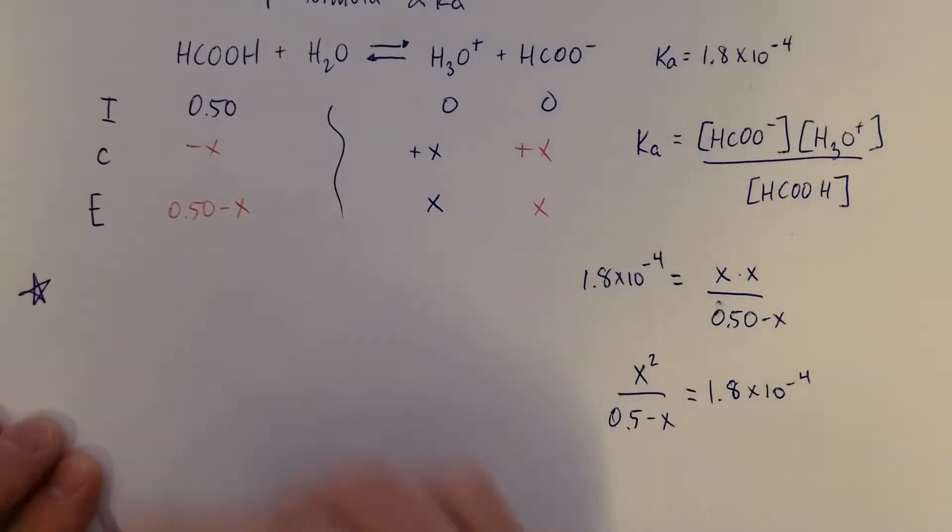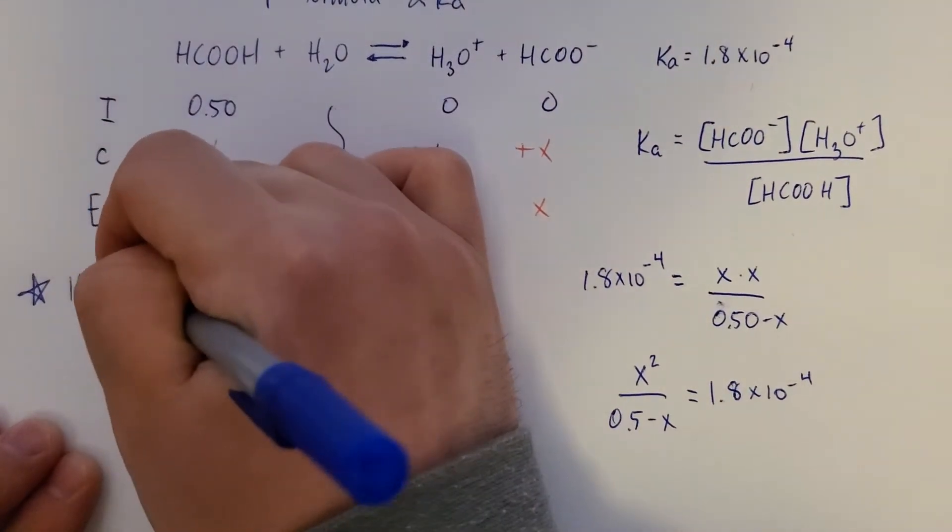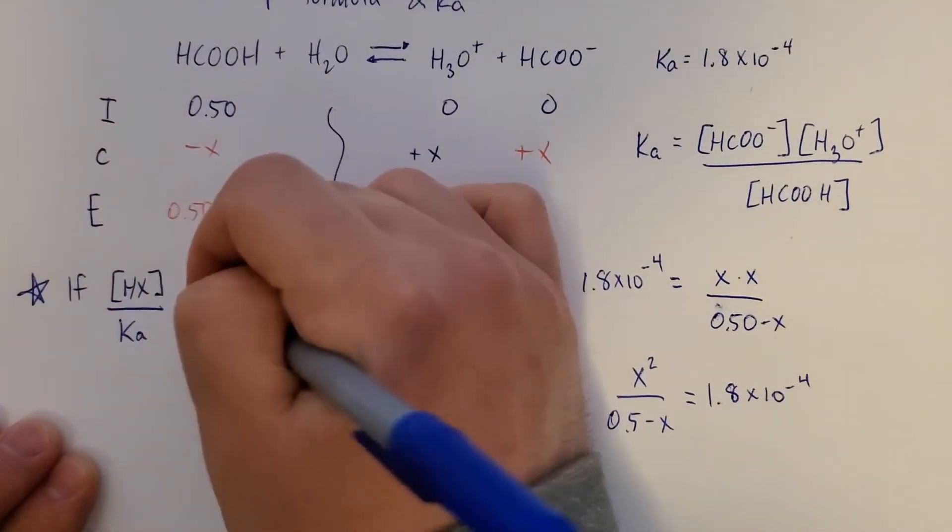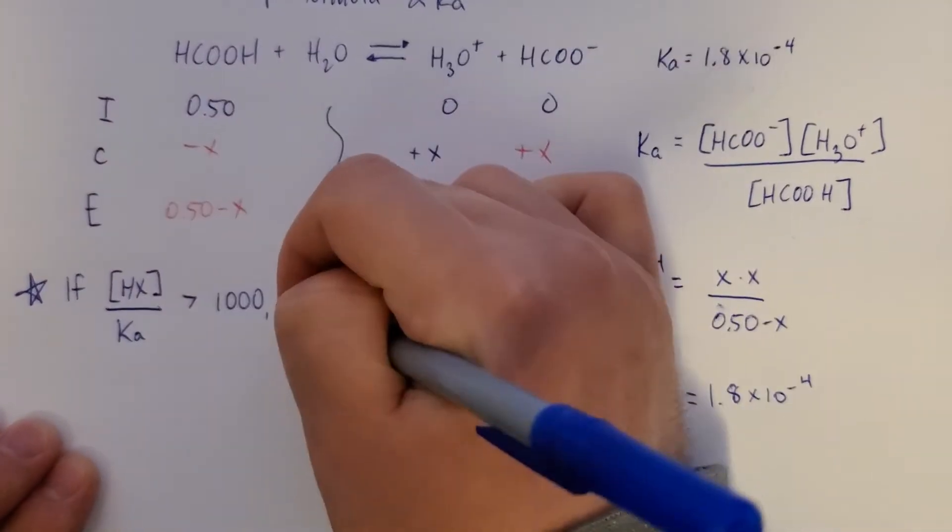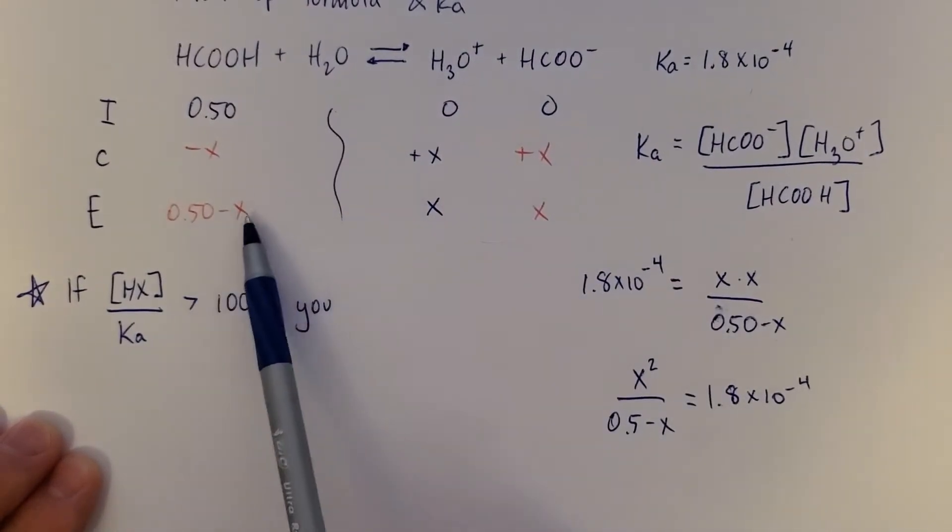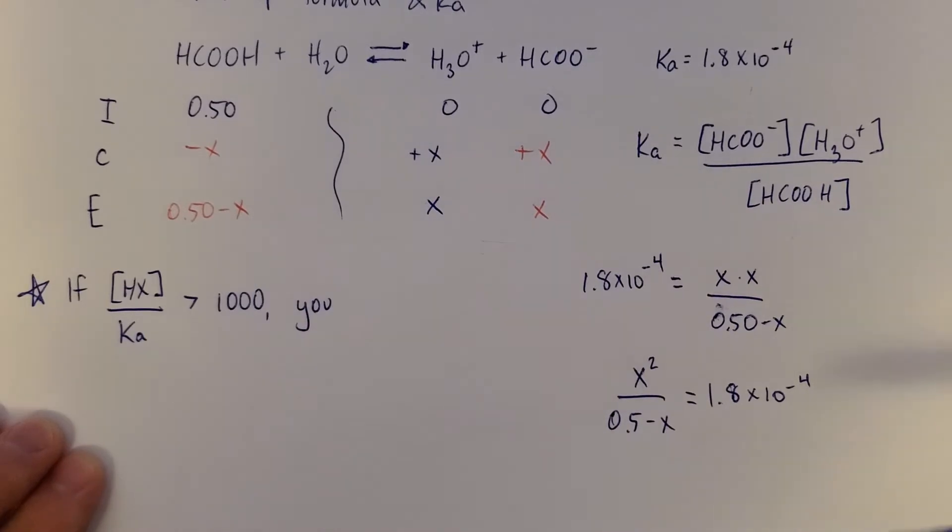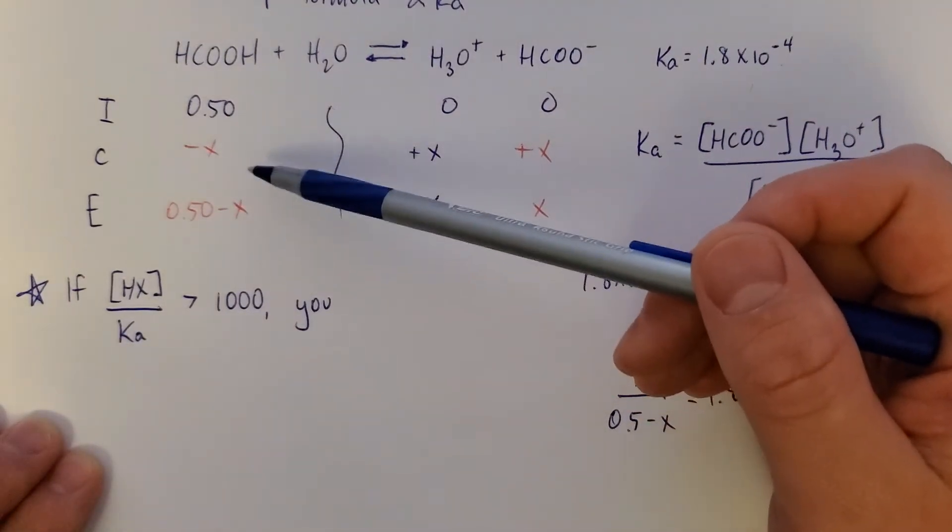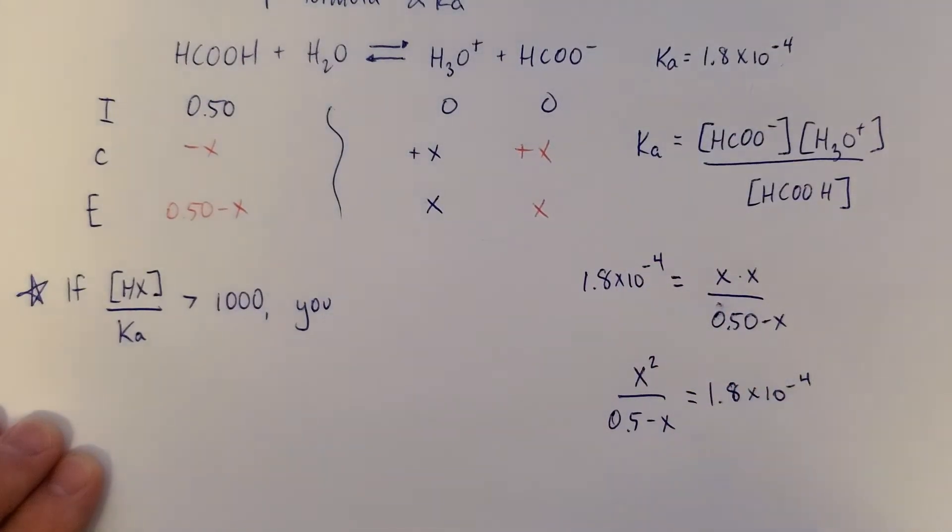If the weak acid concentration divided by Ka for that acid is greater than 1,000, what that means is that the change is so small, it still falls within the plus or minus 5% accuracy of Ka. That was brought up in the previous video. So this is only good within 5%. And if this value is greater than 1,000, the change is so small that you don't even need to worry about it.